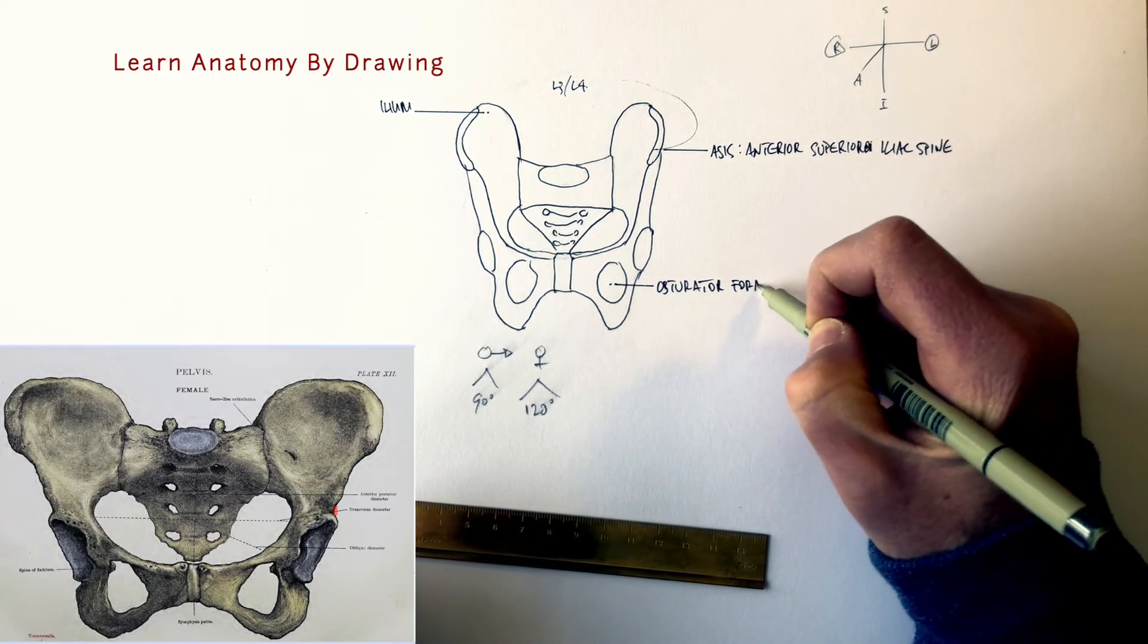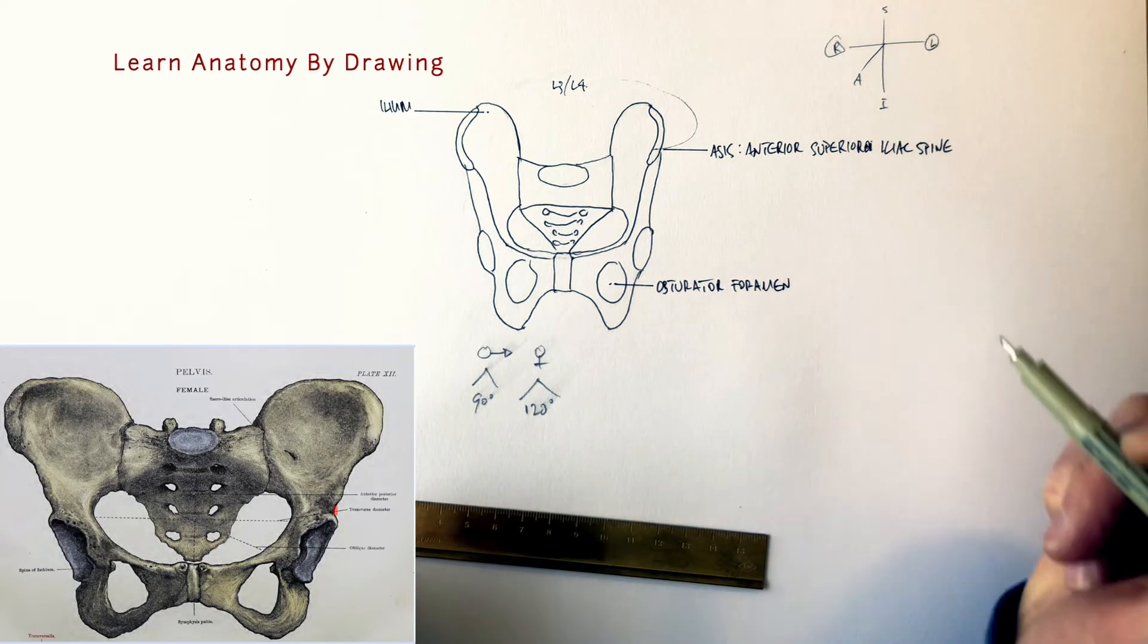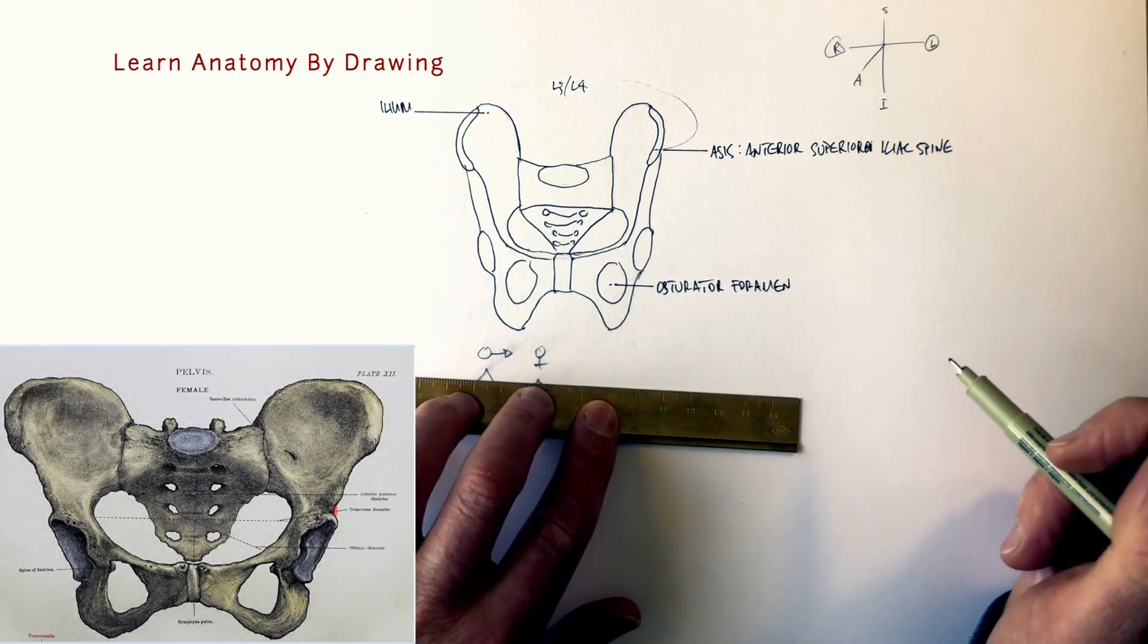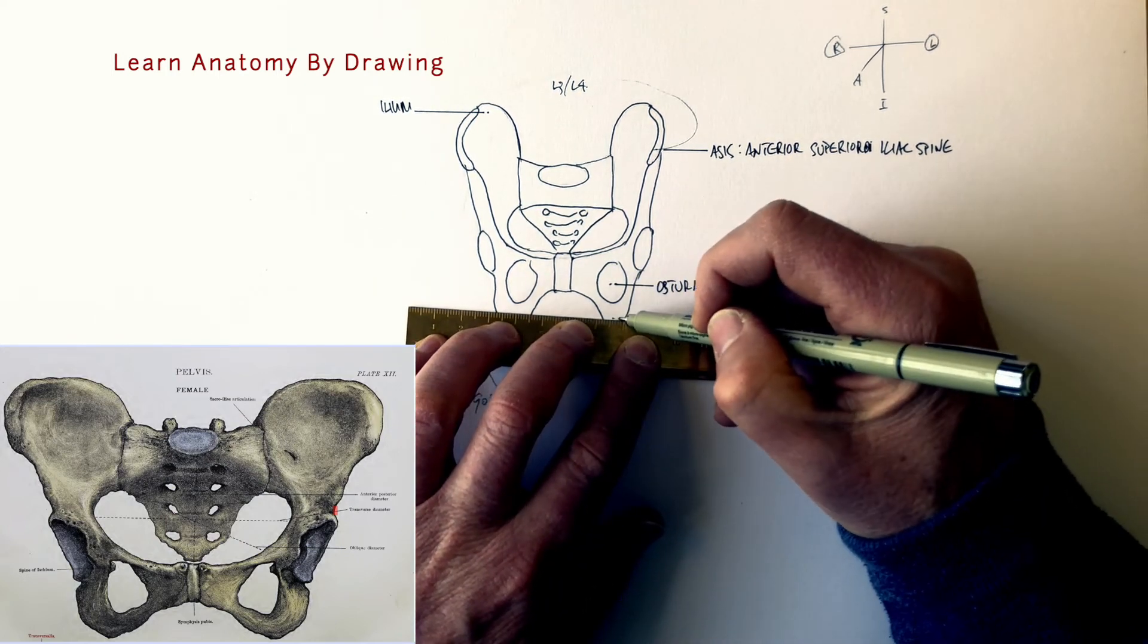This was the obturator foramen, foramen meaning hole. This is the ischium.